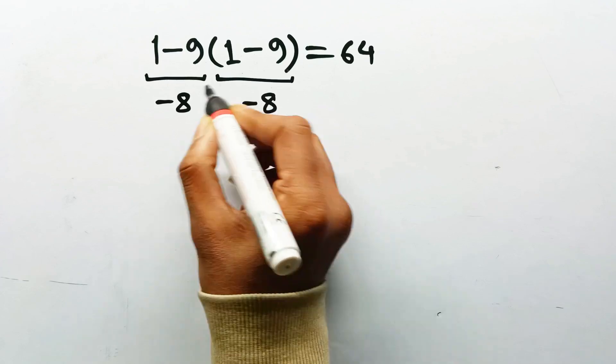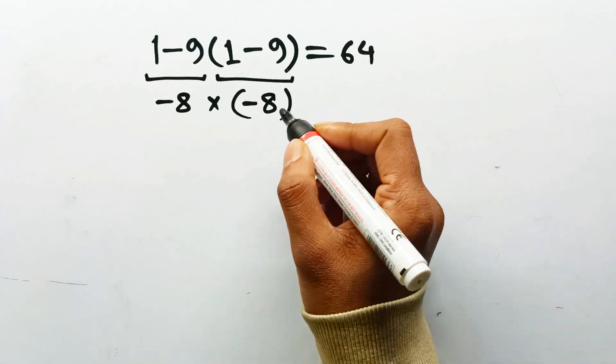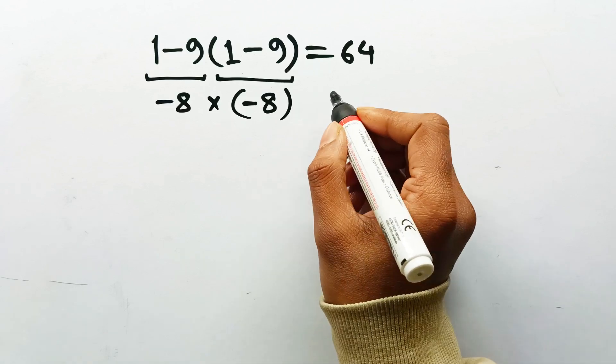Then your brain goes, oh nice, negative 8 times negative 8 is positive 64. Feels clean, feels powerful, feels illegal.